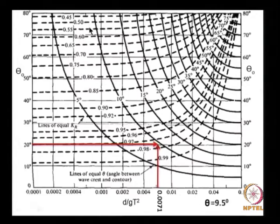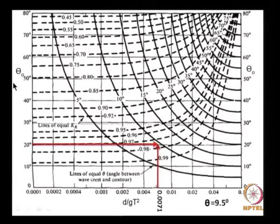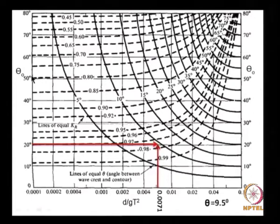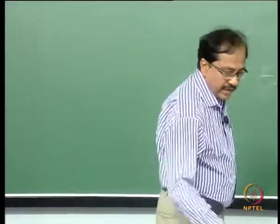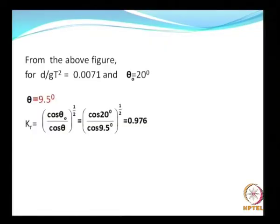This nomogram shows lines of equal θ. You need only the wave period to arrive at the D/GT² parameter, and θ₀ is the other input. For θ₀ = 20 degrees, the value falls at the corresponding D/GT² location. If θ₀ were 50 degrees, the angle would be somewhere else. Just use this nomogram to get a reasonable result for wave direction in any given water depth.